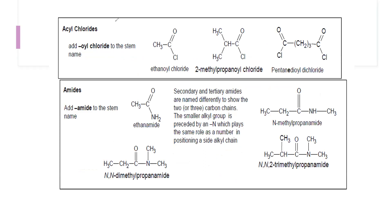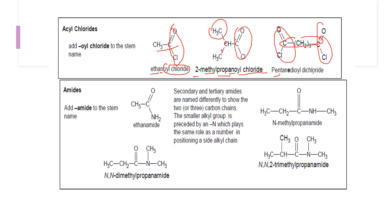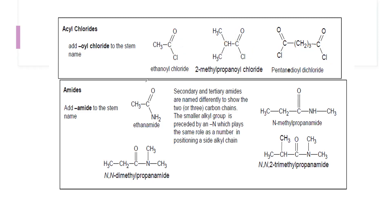For acyl chlorides, the functional group is C=O with Cl, and the suffix '-anoyl chloride' is used. With two carbon atoms it is ethanoyl chloride. If there is a methyl branch at position 2 on a three-carbon chain, it is 2-methylpropanoyl chloride. If there are five carbons and two acyl chloride groups, it is pentanedioyl dichloride — 'di' before 'oyl chloride' for two groups, and 'ane' is retained because 'di' does not start with a vowel.